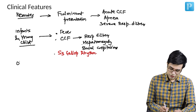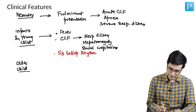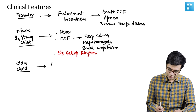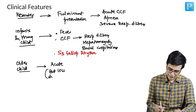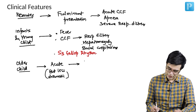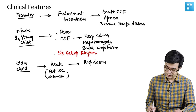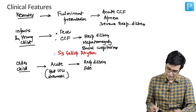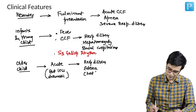Then in the older children and adolescents, they usually have an acute presentation, but less dramatic as compared to the above. They will also have features like respiratory distress. These are the children who will start to develop edema, mainly pedal edema. They will also have some degree of chest pain.